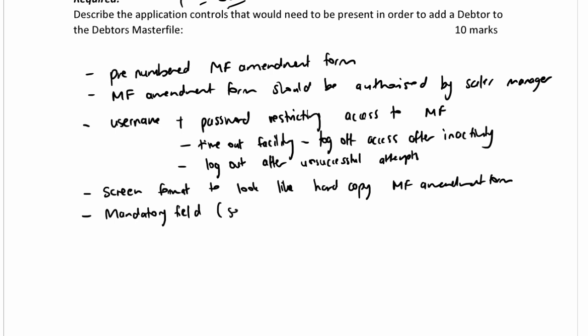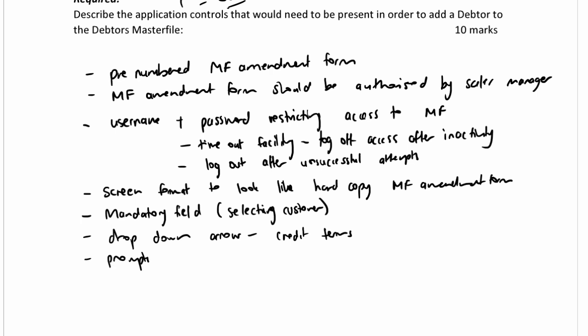Additional screen aids include mandatory fields for selecting the customer to add to the master file. There could also be a drop-down arrow for credit terms that have been authorised, and prompts to assist with data input.